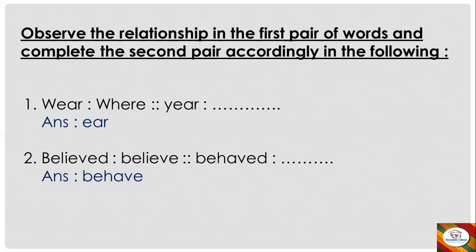Second question: 'believed' is to 'believe' as 'behaved' is to dash. These are verbs in their original forms and in the past form. 'Believed' is in the past form and 'believe' is in the original first form. So: 'believed' is to 'believe' as 'behaved' is to 'behave'.